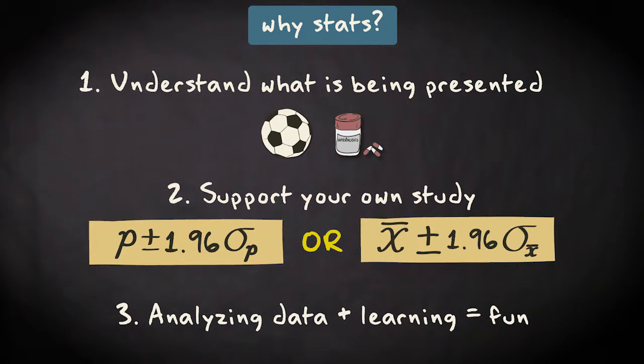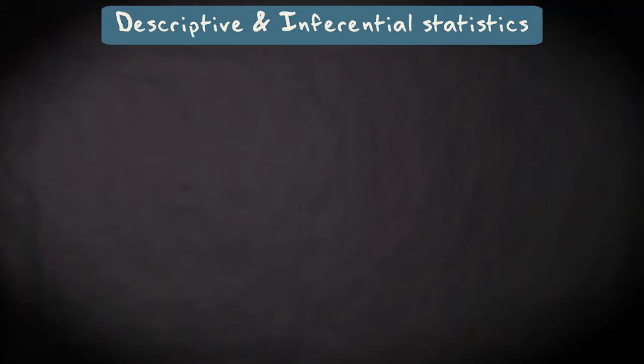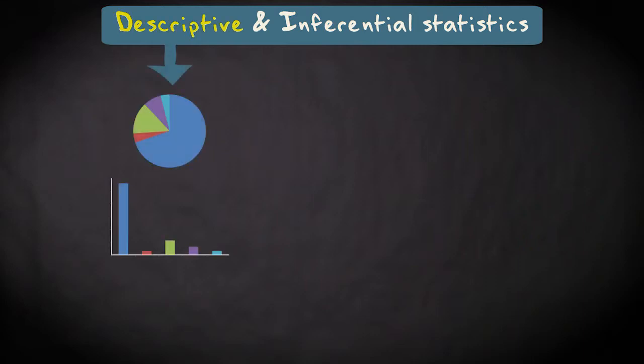We'll make a distinction between two types of statistics: descriptive and inferential statistics. When we talk about descriptive statistics, we mean methods of summarising the information we have collected for an analysis. We can summarise information by means of graphs, such as a pie chart or a bar graph, or numbers, such as a mean, percentage or correlation coefficient.